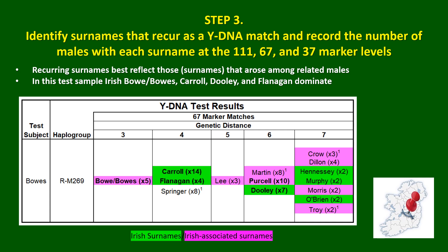The reason I'm looking for recurring surnames is that they best reflect those that arose among those related males. In this instance you can see that Boe, Carroll, Dooley, and Flanagan — shown in bold — are the most frequent exclusively Irish surnames, and that's why they're highlighted.